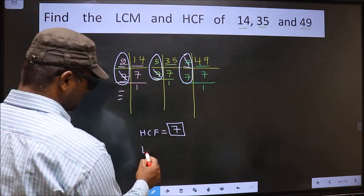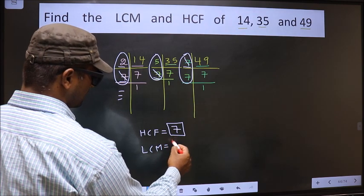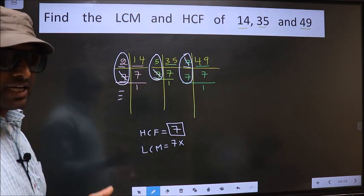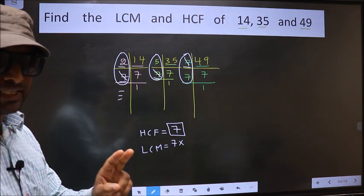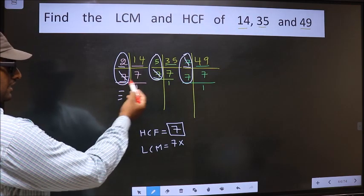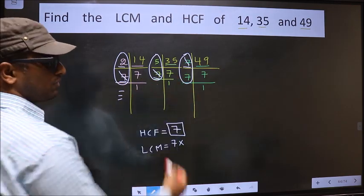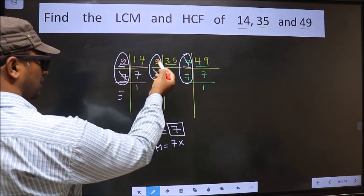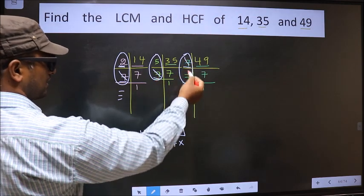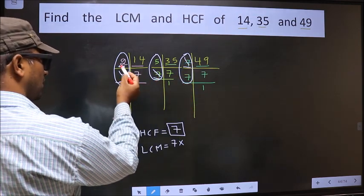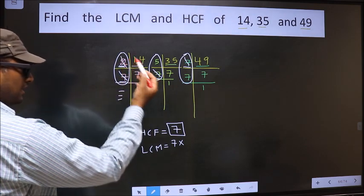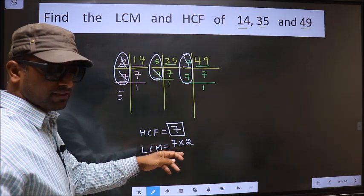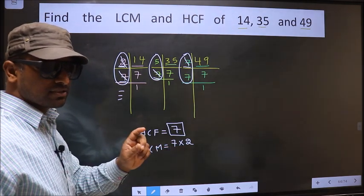Now to get LCM, whatever HCF we got, to that we should multiply by the numbers which appeared either once or twice in these 3 places. Here, 2 is not cut. Do we have 2 here? No. Next place, do we have 2 here? No. 2 appeared only once. So you cut 2 and write here. To write a number here, it is enough if it appeared once or twice.